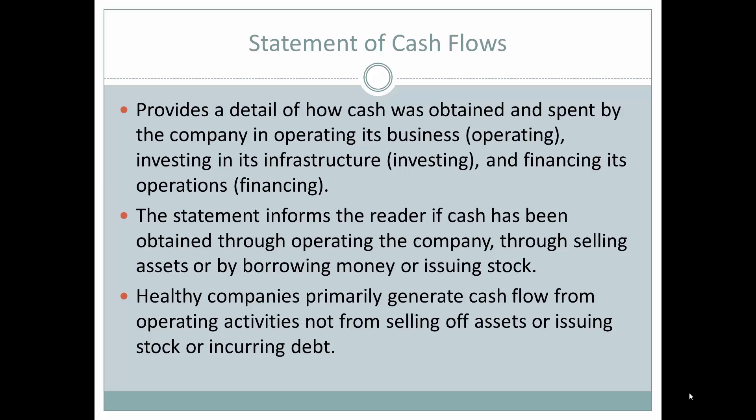It provides detail of how cash was obtained and spent by the company in operating its business, investing in its infrastructure, and financing its operations. The statement informs the reader if cash was obtained through operating the company, selling assets, borrowing money, or issuing stock. Healthy companies primarily generate cash flow from operating activities, not from selling assets or issuing stock or incurring debt — though those are great ways to expand.